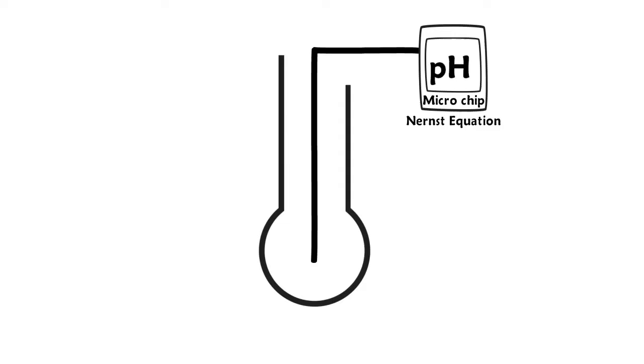Surrounding this wire is an electrical conductive solution called an electrolyte solution. The solution is normally KCL, potassium chloride, at a concentration near 3.5 molar.